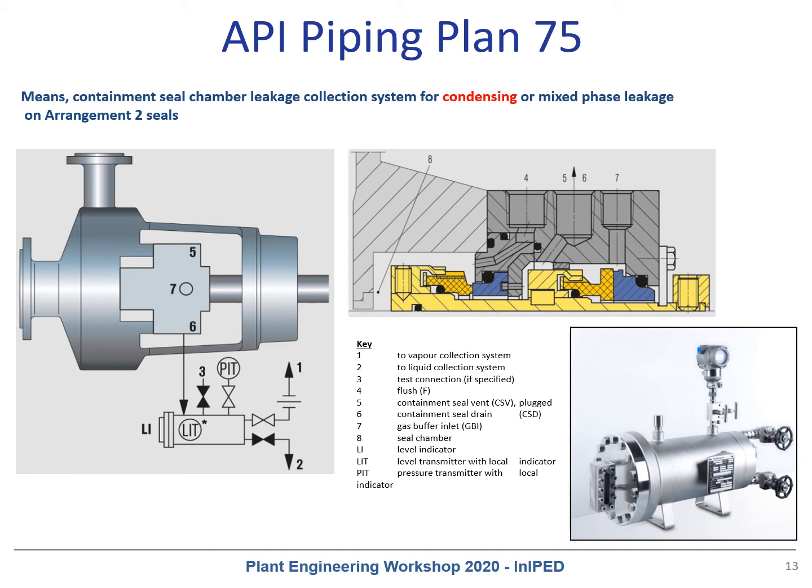Piping plan 75 is a leakage collection system for zero or very low process emissions to the atmospheric side — the environment. It is defined by API 682 as a containment seal chamber leakage collection system for condensing or mixed phase leakage on an arrangement 2 seal.